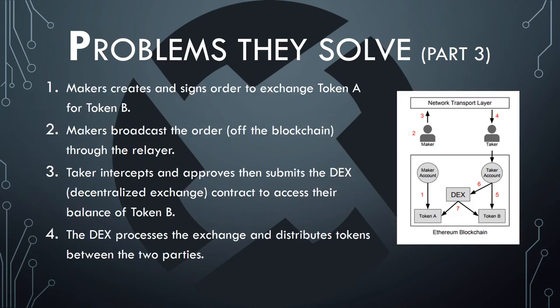This is the process the 0x protocol plans to go through. The maker creates and signs the order to exchange token A for token B. Then the maker broadcasts the order off the blockchain through the relayer. The taker intercepts and approves, then submits to the decentralized exchange contract to access their balance of token B. The decentralized exchange then processes the token exchange and distributes tokens between the two parties.